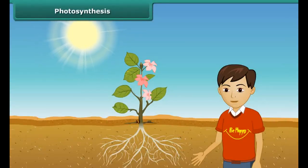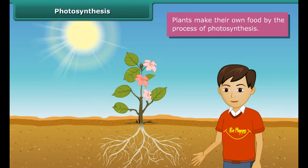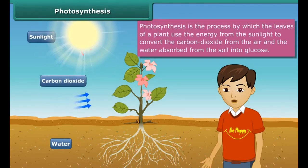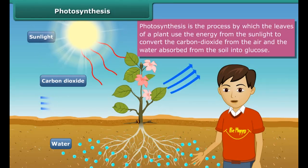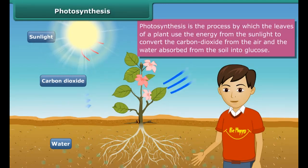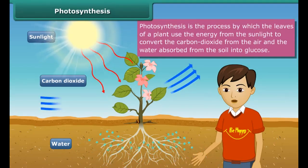Like animals and human beings, plants also require food for their survival. However, unlike animals and human beings, they can make their own food by the process of photosynthesis. This process takes place in the leaves of the plant. The leaves use the energy from the sunlight to convert the carbon dioxide absorbed from the air and the water absorbed from the soil into glucose. The food prepared by leaves is then transported to the different parts of the plant.